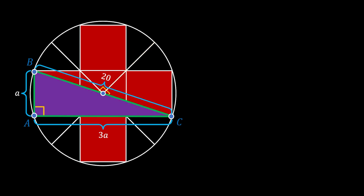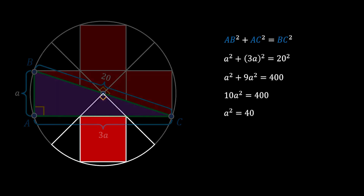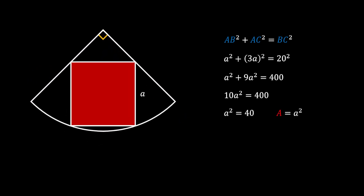Again we notice the purple right triangle, and we use the Pythagorean theorem: AB² plus AC² equals BC². Substituting values, A² plus (3A)² equals 20². Squaring each term, we get A² plus 9A² equals 400. Adding the left side terms gives 10A² equals 400, so A² equals 40. The area of the red square equals A² equals 40 square units, and this is our solution.